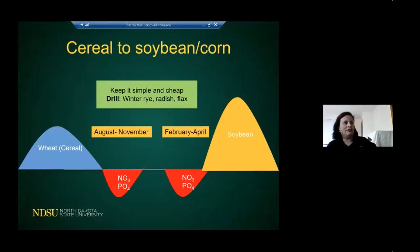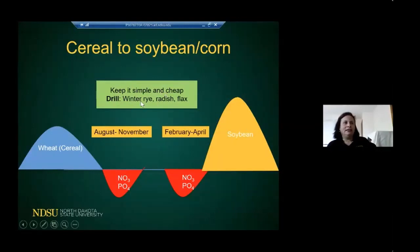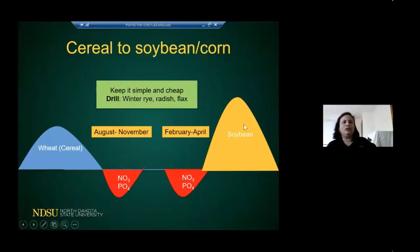From cereal to soybean, you want to keep it simple and cheap — especially if you're not going to graze it and your interest is soil health. Winter rye is very important in the mix when soybean is the next crop, because if it's too wet in the spring you need something to dry up the water so you can plant the soybean. Radish and flax will winter-kill but have other uses.